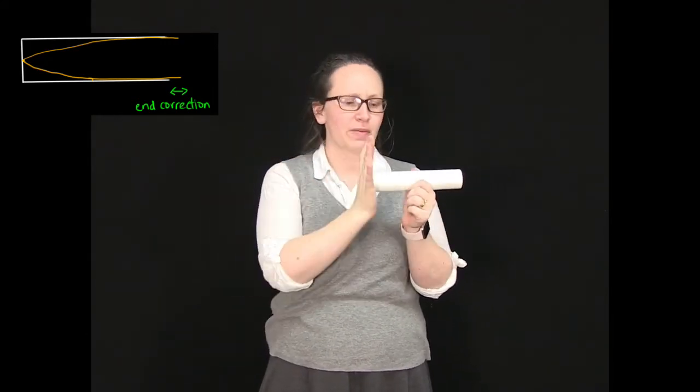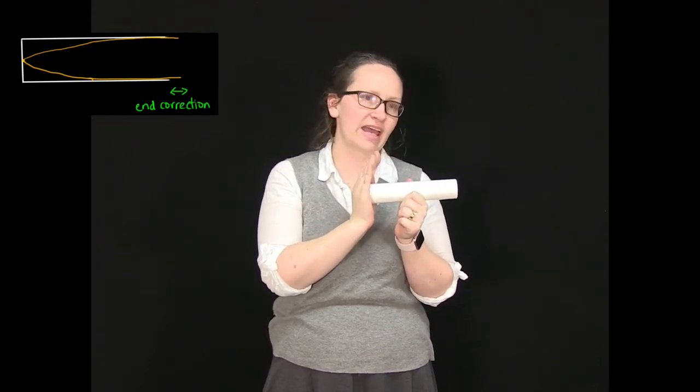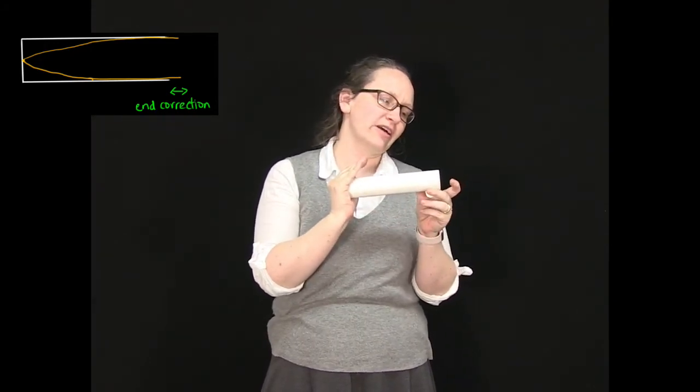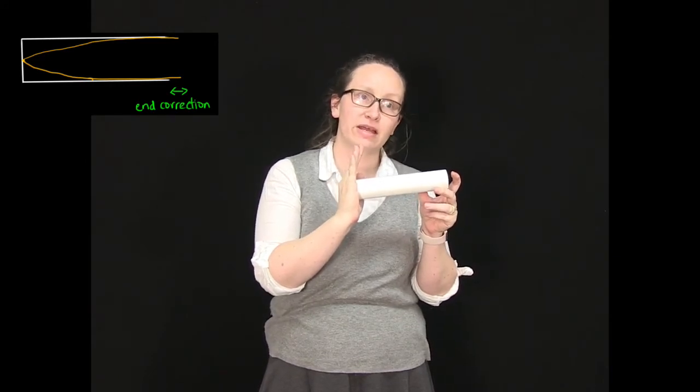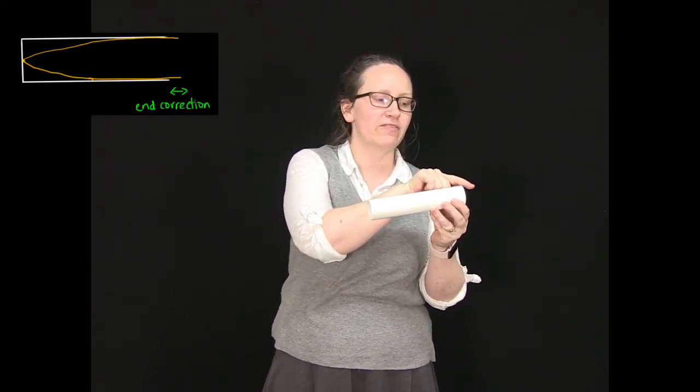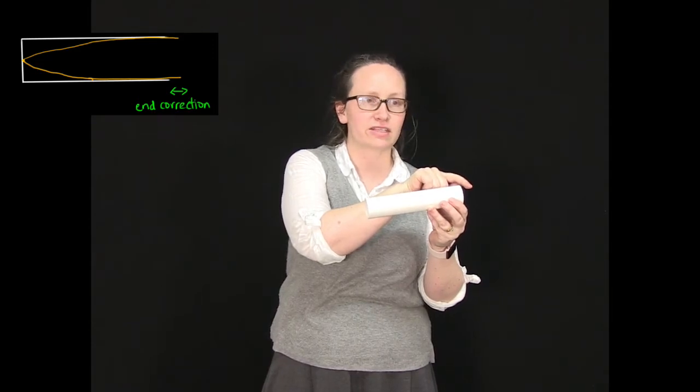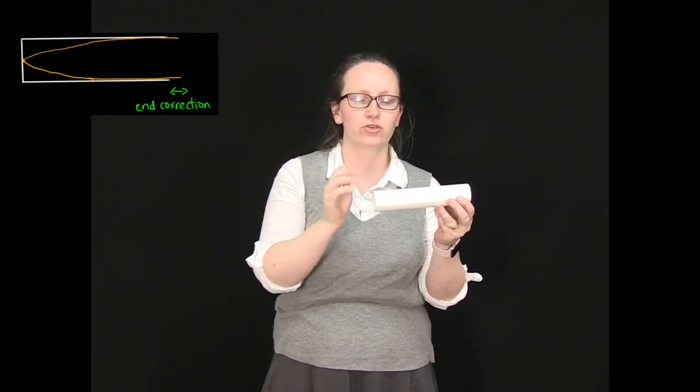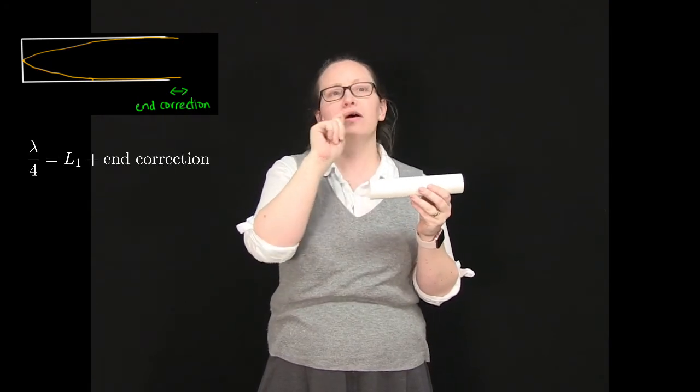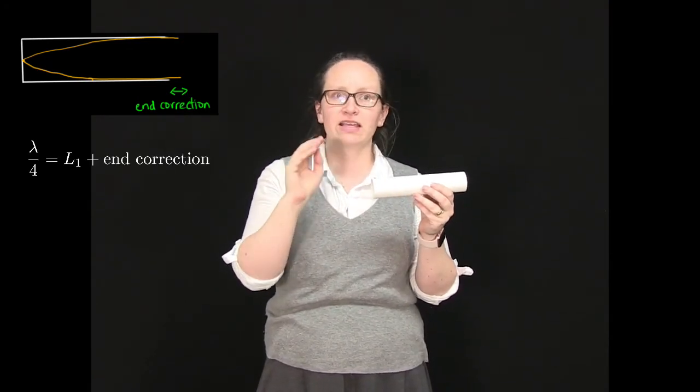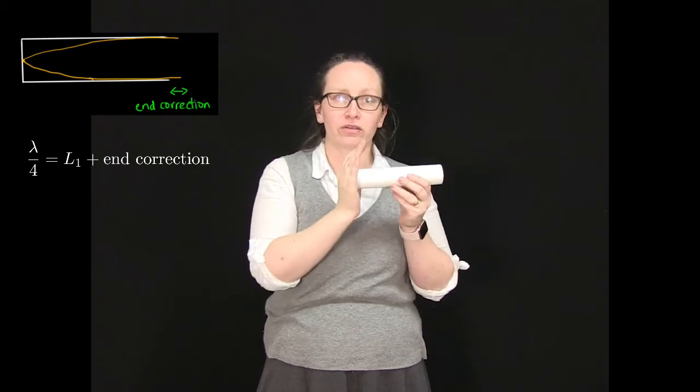So if we imagined a pipe which was closed at one end, then we've got an end correction at this end here. So if we consider the fundamental for this pipe, we've got a quarter of a wavelength going from the start of this end correction here to the end of the pipe. So we can write the length of the pipe plus the end correction is equal to lambda on 4.